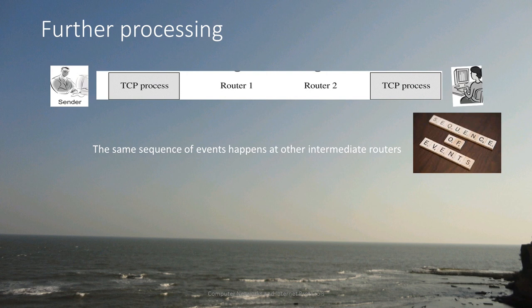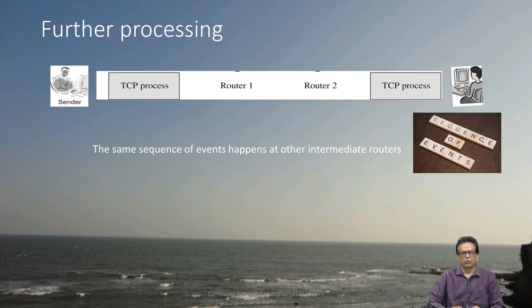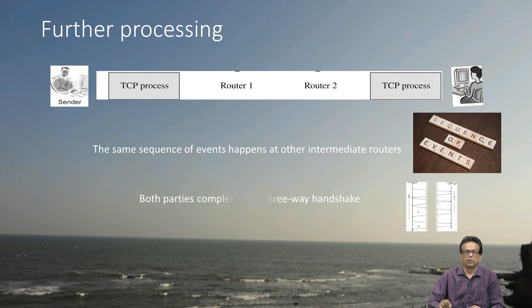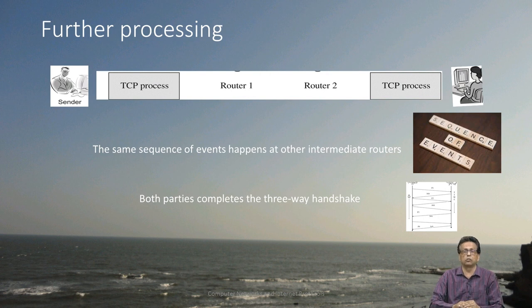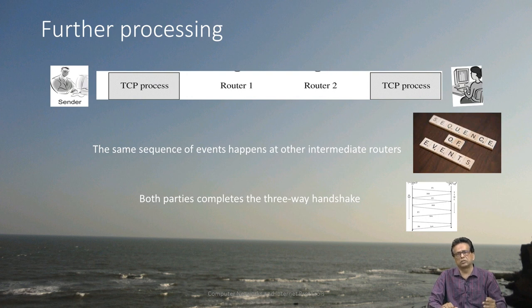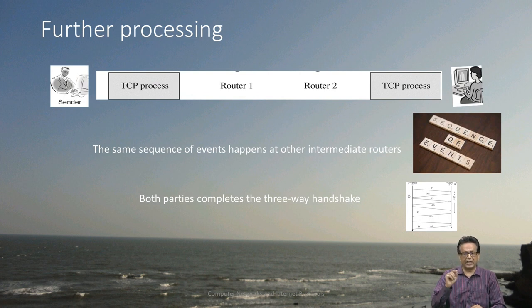The same sequence of events happens at other intermediary routers. We have talked about router number 1, and this is going to happen at router number 2. If there are multiple routers, the same set of sequences are going to happen. Both parties — remember that TCP has to have a communication establishment process, and that is done by something called a three-way handshake. We will be looking at what the three-way handshake is and why it is needed when we talk about transport layer processing.